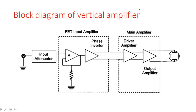Now the block diagram of this vertical amplifier — what it internally has. Basically it has two different amplifiers: one is a FET input amplifier, followed by a main amplifier. The main amplifier is a BJT amplifier. The reason for using a FET amplifier at the start is that FET has high input impedance and low output impedance, whereas BJT has low input impedance and high output impedance. Because of this, FET is chosen as the input device and BJT as the output device.